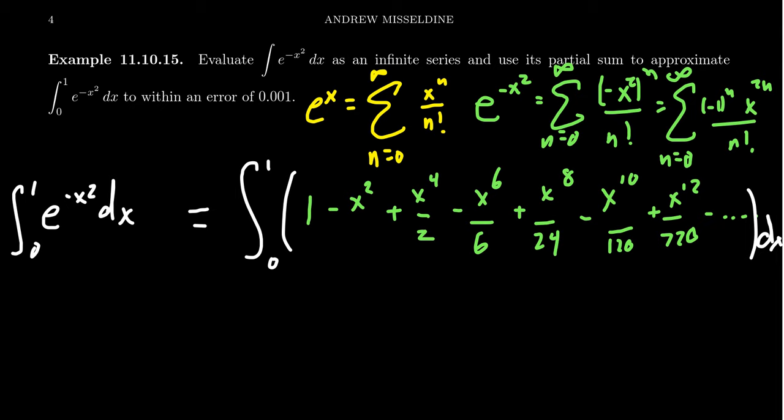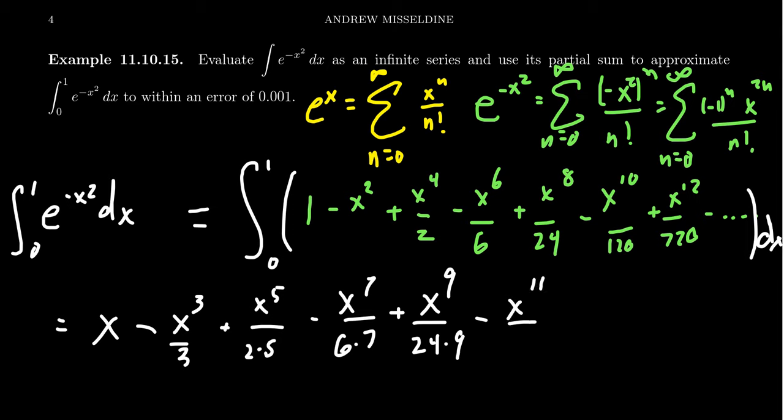So let's integrate this thing. This gives us an x minus x cubed over 3 plus x to the 5th over 2 times 5, minus x to the 7th over 6 times 7, then plus x to the 9th over 24 times 9, minus x to the 11th divided by 120 times 11, and then plus x to the 13th over 13 times 720.